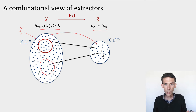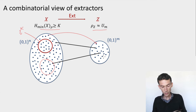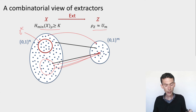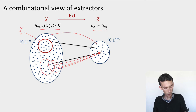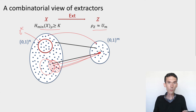Now you can see why we're not going to be able to construct deterministic extractors. Because whatever my extractor is, the input set is bigger than the output set, so I need to have a bunch of arrows pointing to the same dot in the output. Once I fix this function and all the arrows have been decided on, I can always take a source x that is uniform on a set that would be completely mapped to the same point of my output, in which case the extractor would certainly not be secure — the output is completely determined, it's a single string.